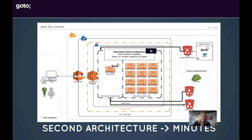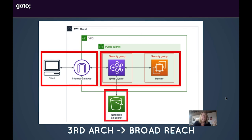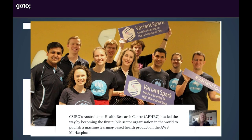Interestingly, when the team that built this went to bring the intermediate solution — the one on EMR — to a wider audience, they actually simplified the diagram. They published this three-aspect architecture on Amazon into the AWS Marketplace. The team that built this is CSIRO in Australia, led by Dr. Dennis Bowers. They were celebrated as the first public sector organization in the world to publish a machine learning-based health product on the AWS Marketplace. I think effective visualization throughout the project is one of the reasons — not only that they more than doubled the size of the team, but that they were able to get this reference architecture out there for reuse.